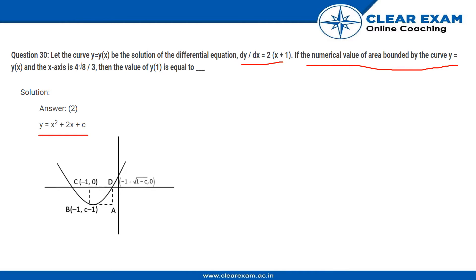We are given that the numerical value of the area bounded by the curve y = y(x) and the x-axis is 4√8/3. The x-axis is over here, and the area bounded by the curve with the x-axis is this region.